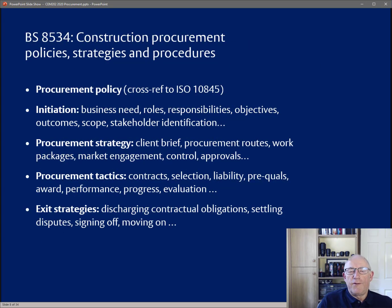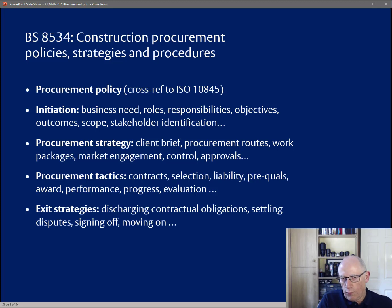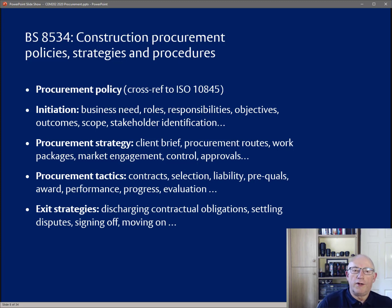On the other hand, British Standard 8534, which was published at about the same time as 8535 around 2011, is currently being revised so that it can form part of a complementary family of standards alongside ISO 10845. In British Standard 8534 we're talking at a much more strategic or policy level. We begin by talking about procurement policy. We never wanted to replicate those aspects of 10845 that deal with tendering, competition, and market objectives — so we simply cross-reference to ISO 10845 in the British standard and advise that that's the best place to go for advice about how to set up the competition.